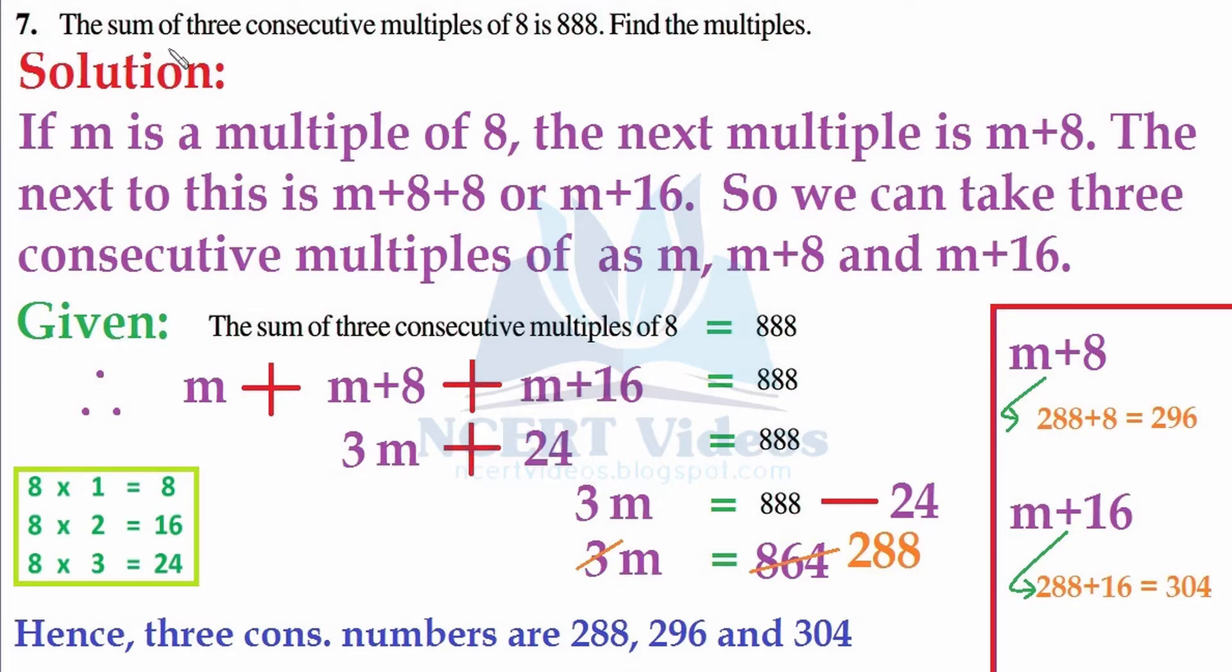Question 7: The sum of three consecutive multiples of 8 is 888. Find the multiples. This time again we have consecutive, that means continuous multiples of 8. When you add them up it gives 888, so we have to find those multiples.